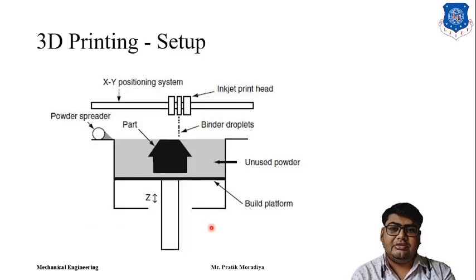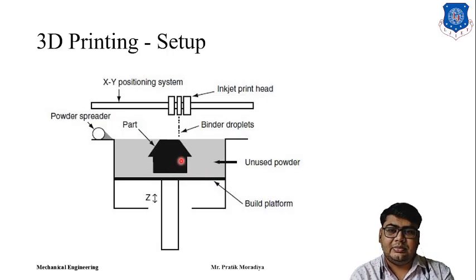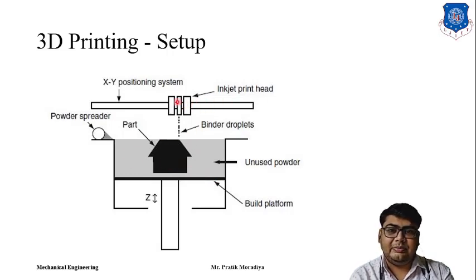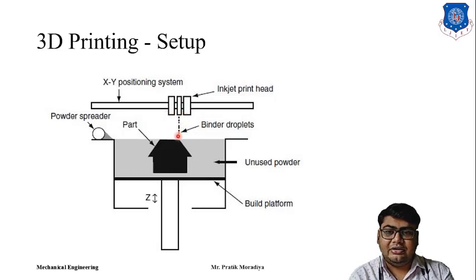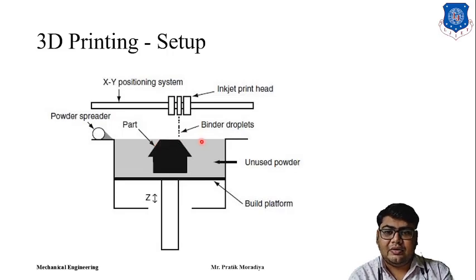In the 3D printing setup there will be a build platform, a powder bed, and an inkjet print head similar to a 2D printer. The binder is spread on the bed, and wherever the binder lands that part will be solidified. All other areas remain in powder form.